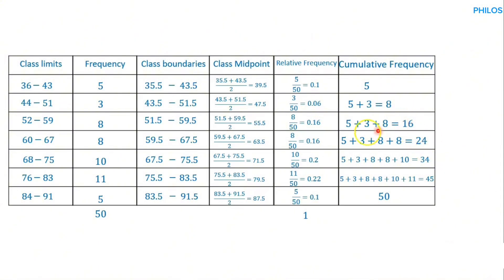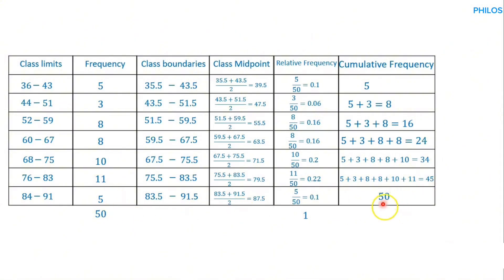To get 24, take the previous cumulative (16) plus the frequency of that class (8). For the fifth class, take the fourth class cumulative (24) and add the fifth class frequency (10) to get 34. Then 34 plus 11 gives 45, and 45 plus the last class frequency of 5 gives 50. That's another way to compute cumulative frequency.